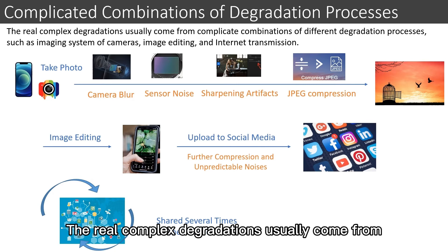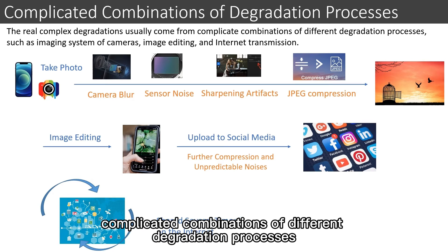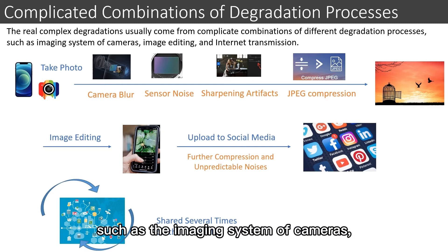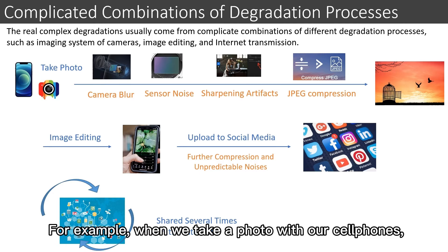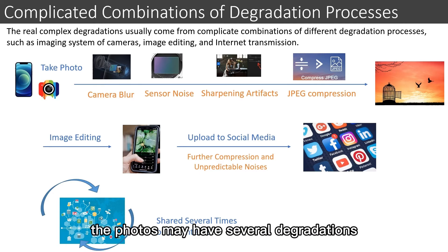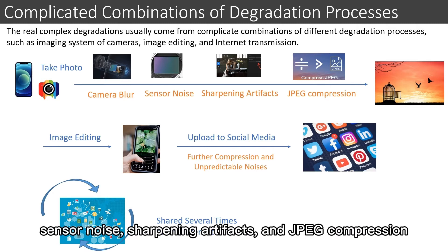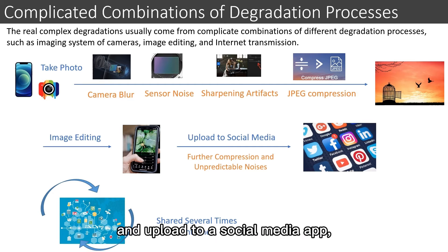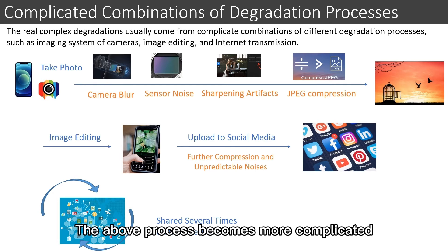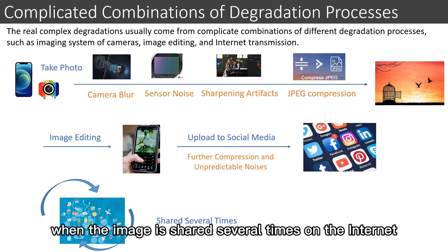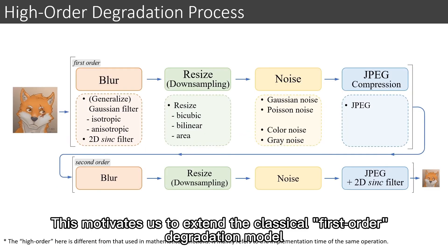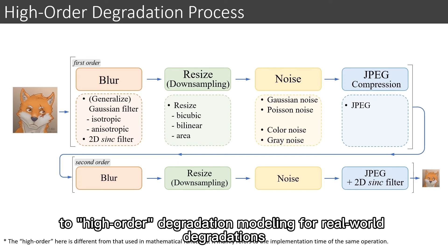The real complex degradations usually come from complicated combinations of different degradation processes, such as the imaging system of cameras, image editing, and internet transmission. For example, when we take a photo with our cell phones, the photos may have several degradations such as camera blur, sensor noise, sharpening artifacts, and JPEG compression. We then do some editing and upload to a social media app, which introduces further compression and unpredictable noises — and the process becomes more complicated when the image is shared several times on the internet.